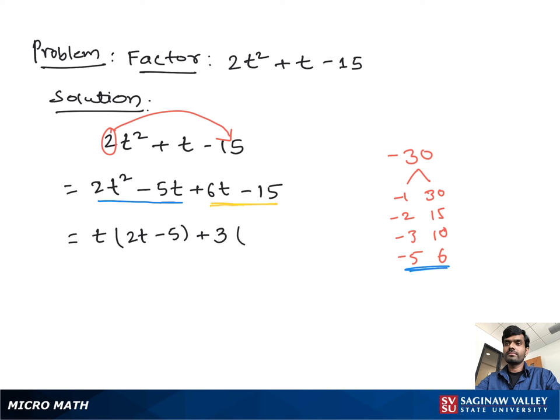So then we get 2t - 5. From both sides we take out 2t - 5 as a common. So we can write (2t - 5) and we write the remaining (t + 3). And this is our final factor.